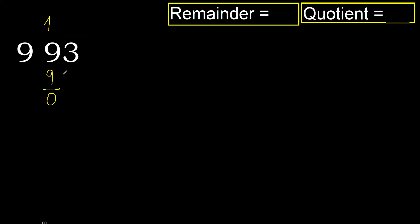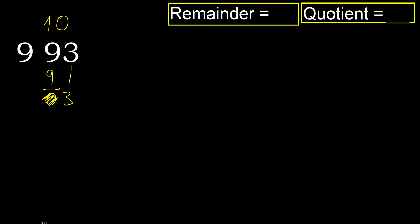Subtract — result is 0. Next, bring down the 3. 3 is less than 9, therefore we move to the next step. Since there is no further digit, finish it — complete with 0, because here we finish with this number.